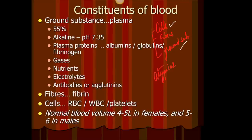If you took all the cells out, the fluid left behind is plasma. When blood clots, what is left behind is called serum. Serum is similar to plasma, but it is usually minus the proteins. So serum is the same as plasma, but minus proteins.